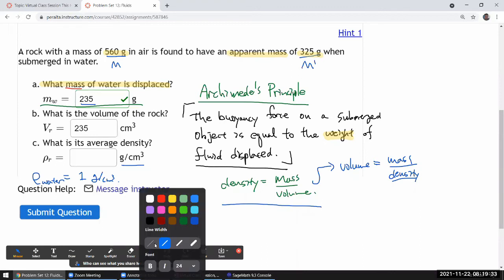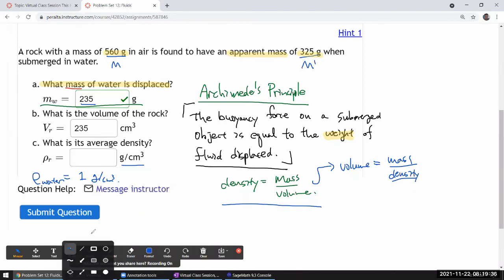So once you have the volume of the rock, then for the last question it's a matter of just using this relationship again to figure out the density. We have the mass—we have the mass of the rock in air, which ought to be close to its mass as measured in vacuum—so I'm just going to use that 560 grams and divide by its volume.